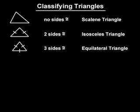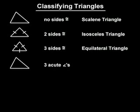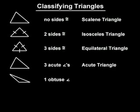Another way of classifying triangles is by their angle measures. A triangle that has three acute angles is called an acute triangle. A triangle that has one obtuse angle is called an obtuse triangle.